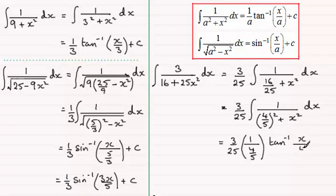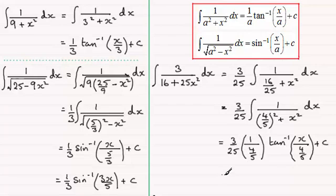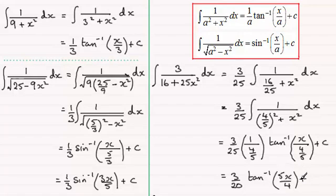Substituting a equals 4 fifths into the formula, we get 3 over 25 at the front, multiplied by one over a — that is, one divided by 4 fifths — then multiplied by the inverse tan of x over a, where a is 4 fifths. One over (4 fifths) gives us 5 over 4, and 3 over 25 times 5 over 4 simplifies to 3 twentieths. So the final answer is 3 twentieths times inverse tan of 5x over 4 plus c. I hope this gives you some idea of how to handle these types of integrals.